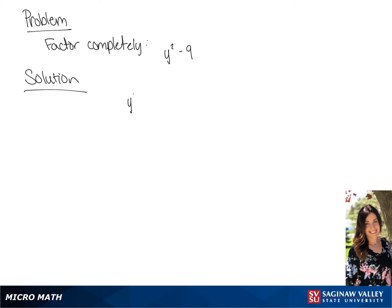We are going to factor y squared minus 9. We're going to break this up into two binomials. We know that y will be the first term of each binomial, and we know the square root of 9 is 3. So fully factored we have y minus 3 times y plus 3.